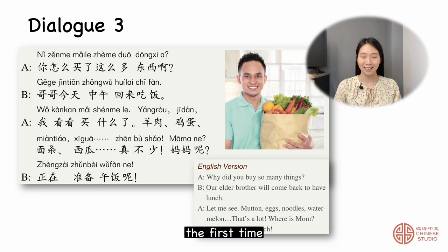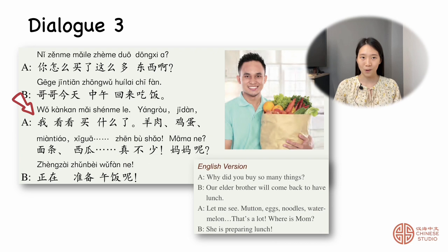Dialogue 3, the first time. 你怎么买这么多东西呀？哥哥今天中午回来吃饭。我看看买什么了：羊肉、鸡蛋、面条、西瓜。真不少。妈妈呢？正在准备午饭呢。